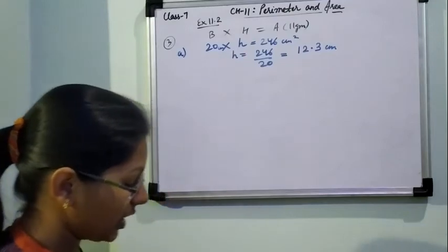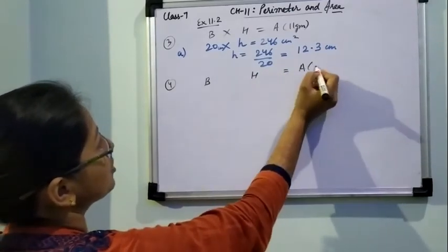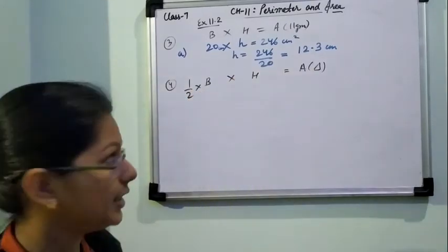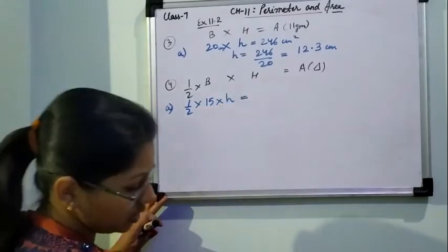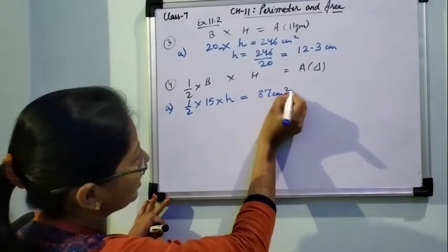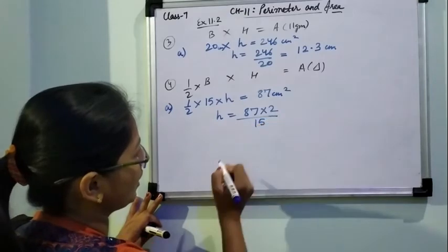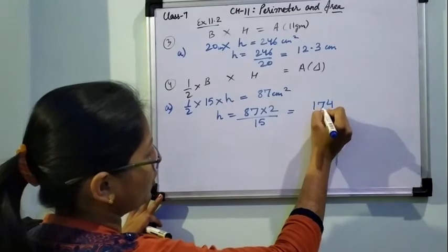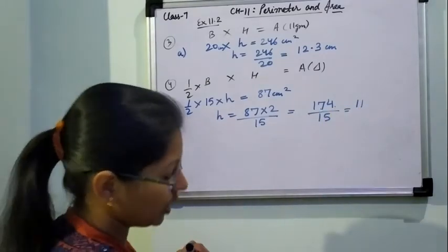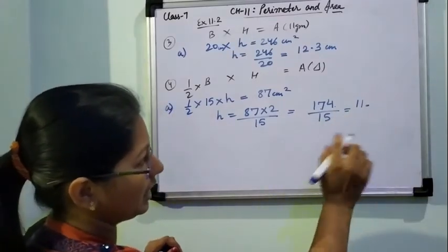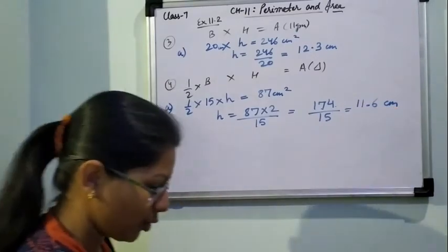Similarly for question number 4, we find the missing value for triangles. Base, height, and area are given in a table. The formula is: half into base into height = area of triangle. For part A, base is 15, area is 87 cm square, and we need to find height. Rearranging: height = (87 × 2) ÷ 15 = 174 ÷ 15 = 11.6 cm. This is the answer for part A.